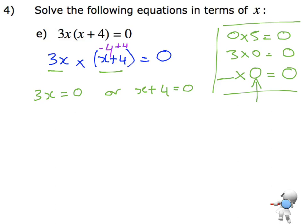So if 3x is equal to 0, then to get rid of that 3, I am dividing both sides by 3, and 0 divided by 3 is 0. Or if x plus 4 is equal to 0, take the 4 to the other side and it becomes x equals negative 4.